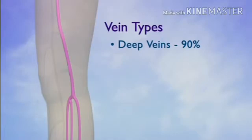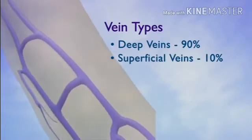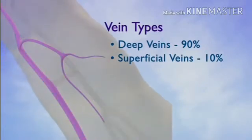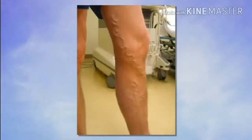The superficial veins return the remaining 10% of the blood from the leg. The superficial veins are often visible, especially when diseased. Malfunctioning superficial veins often cause pain, heaviness, skin changes, and even skin ulceration.